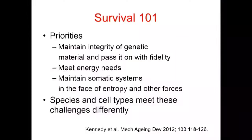What do we need to survive on the planet? We need to do three things. First — and we focus on this enormously — maintain integrity of genetic material and pass it on with fidelity. But we forget about the other two: meet energy needs, since the cell has to do work even to make DNA or proteins; and maintain somatic systems in the face of entropy, like chaperone proteins that help refold misfolded proteins. There's a constant output of energy fighting the second law of thermodynamics, which contributes to our aging.